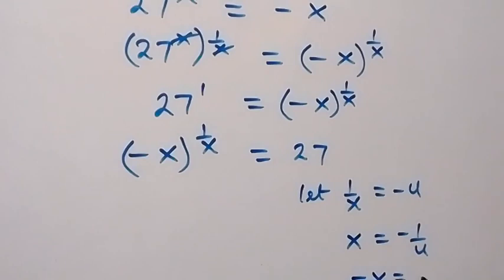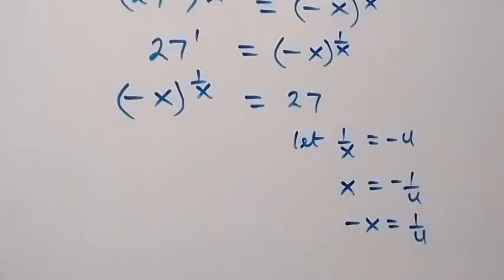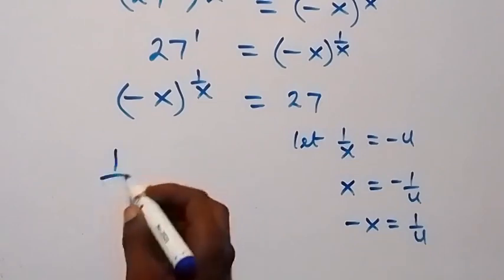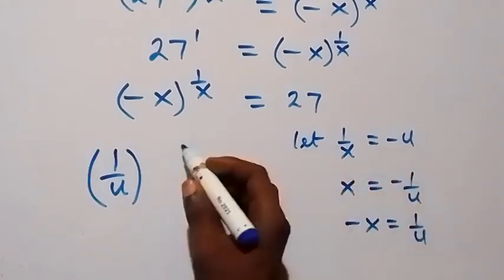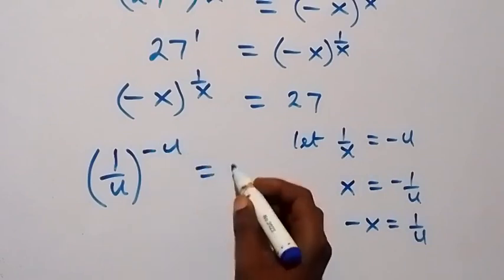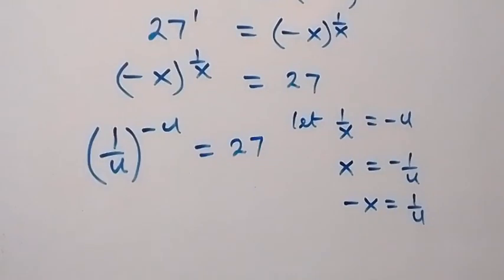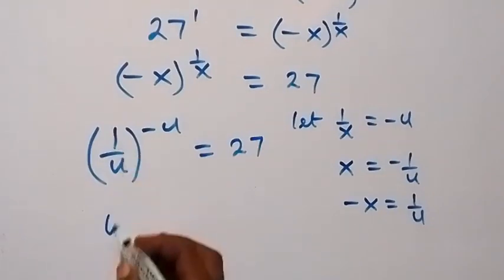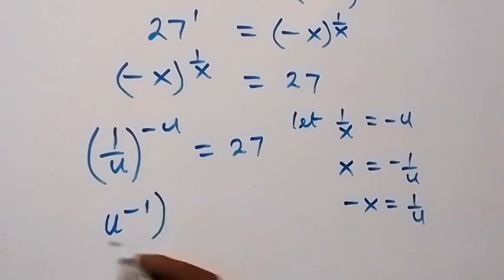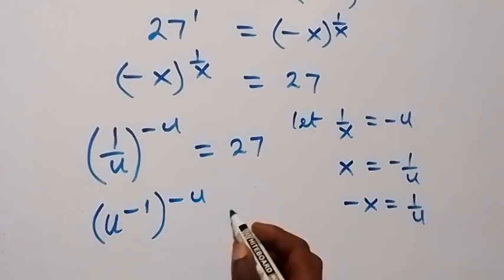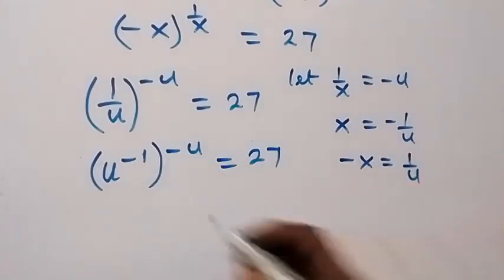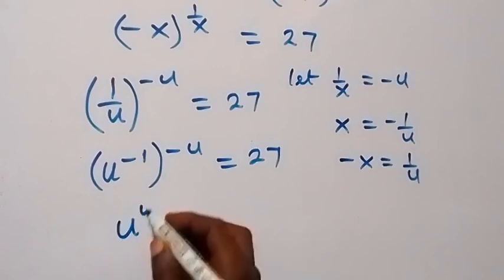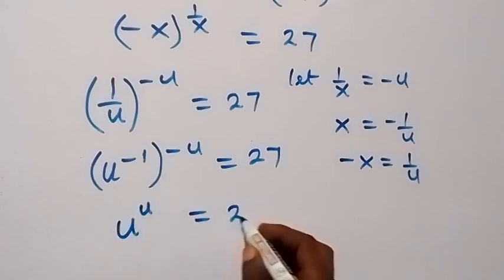This also implies that minus x equals to 1 over u. When we make this substitution, we have minus x written as 1 over u, raised to power 1 over x, and 1 over x is minus u, so that equals to 27. From the law of indices, 1 over u can be written as u raised to power minus 1, raised to power minus u, equals to 27. When these powers multiply, minus times minus becomes plus, so we have u raised to power u equals to 27.